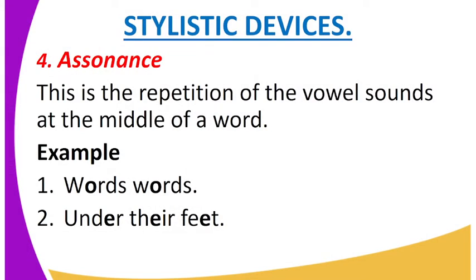Then we have assonance. This is the repetition of vowel sounds in the middle of a word. So in alliteration we said it is repetition of consonant sounds at the beginning of a word, and in assonance it is repetition of vowel sounds at the middle of a word. For example, the sound 'o' in two similar words is repeated. Another example: 'under their feet' — the sound 'a' in the second and third words is repeated. That is assonance.